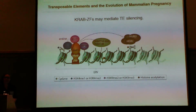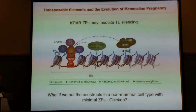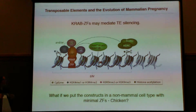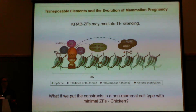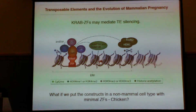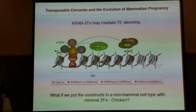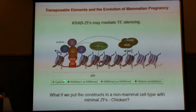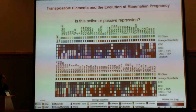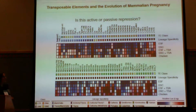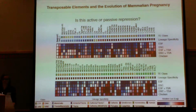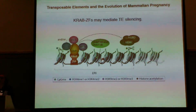To confirm this, we put these constructs in a non-mammalian cell type with minimal zinc fingers — chicken cells. Chickens should never have seen a mammal-specific or younger transposable element, and they only have eight zinc fingers compared to the hundreds that humans have, really minimizing any targeted repression. When we do this, even more dramatically than with trichostatin A, we see a major relief of repression across the board, with many elements that were previously repressors becoming enhancers in the chicken cell type — further supporting this model.